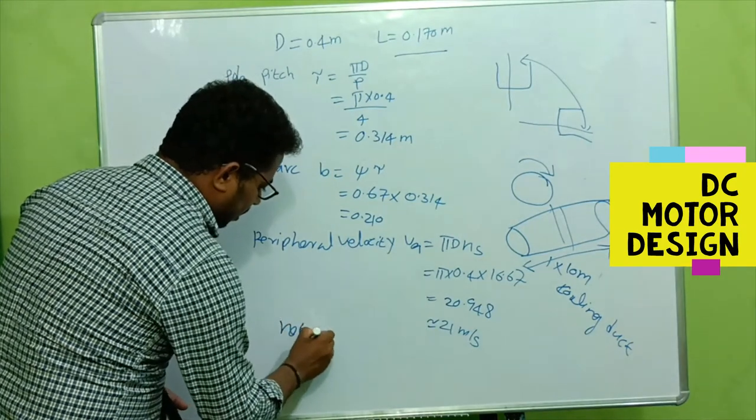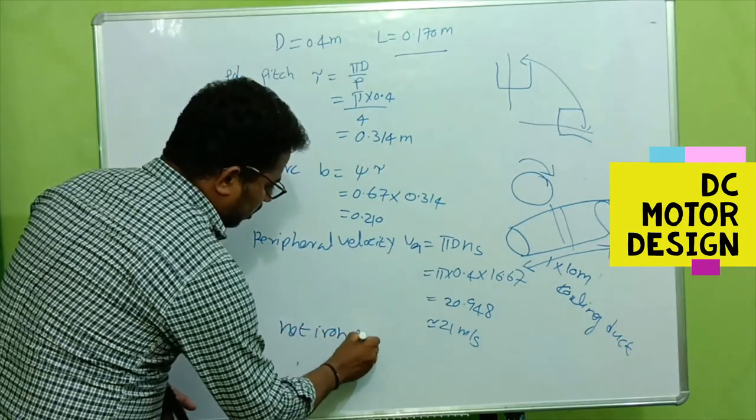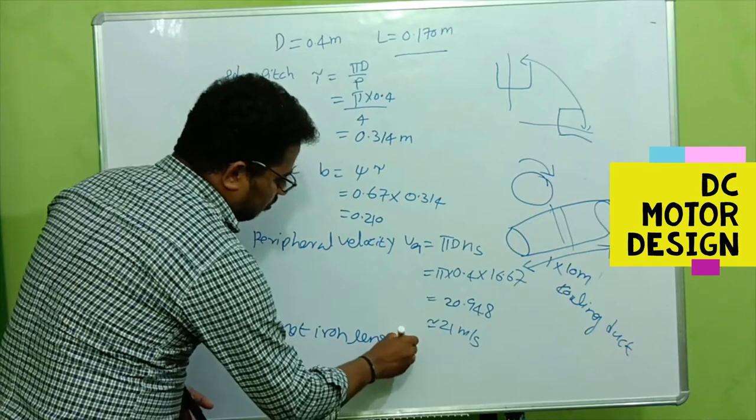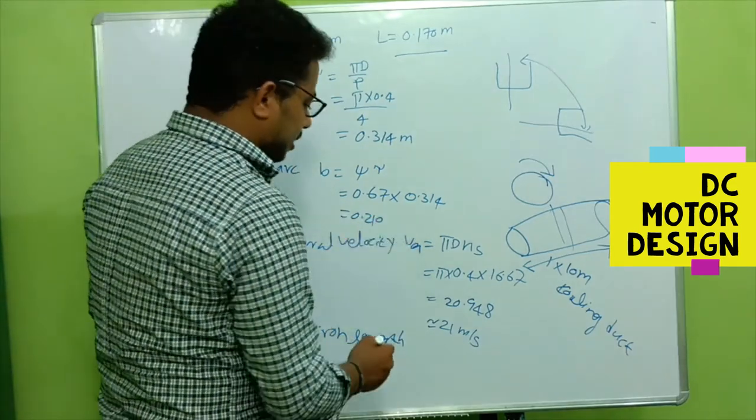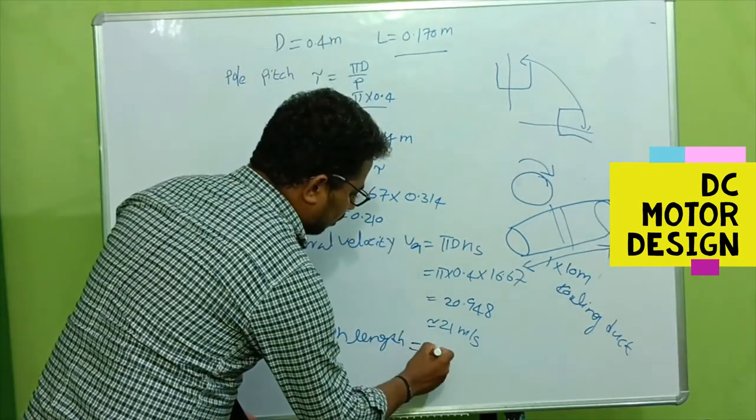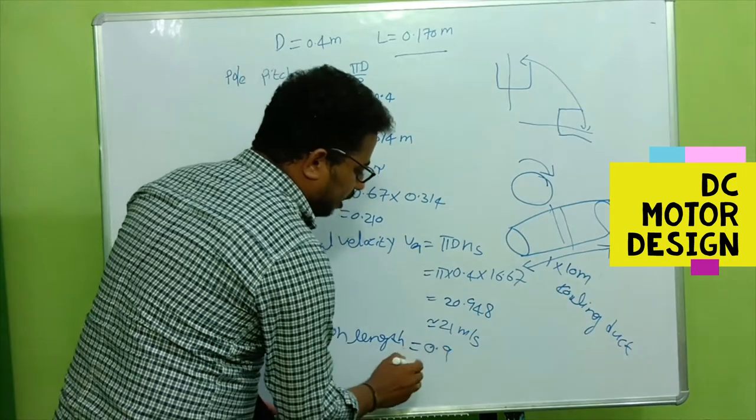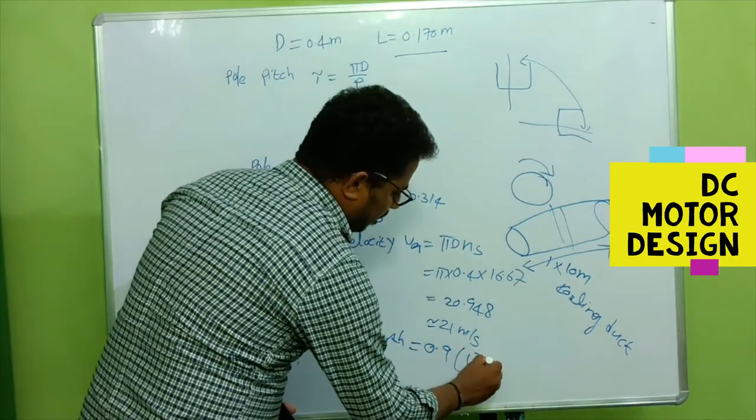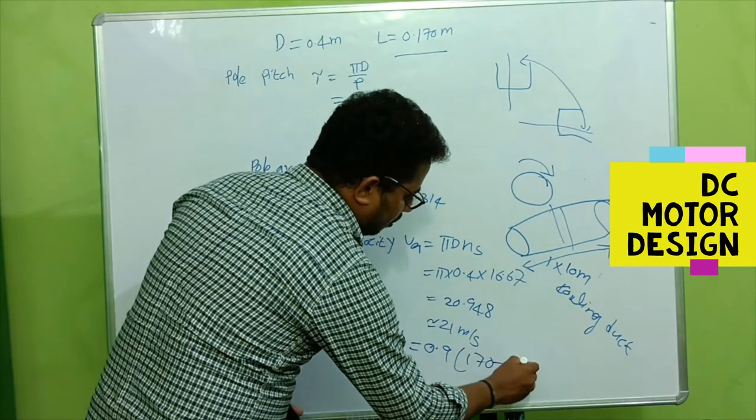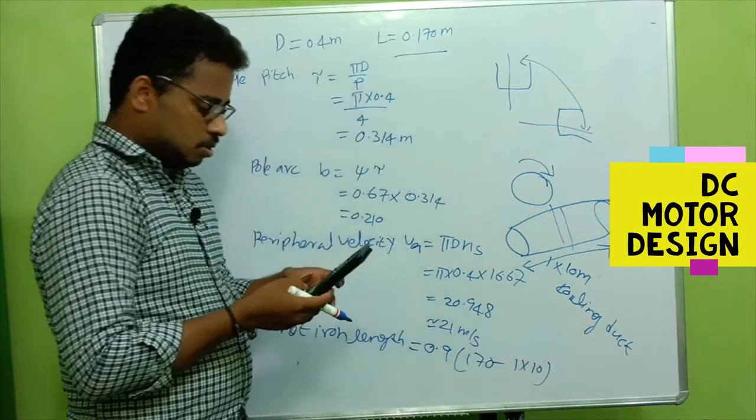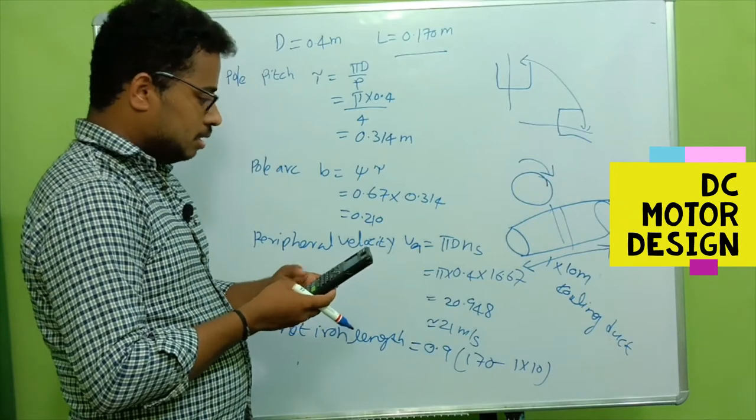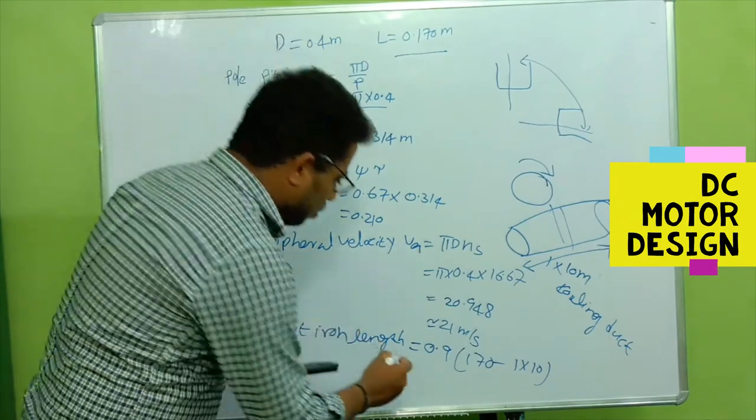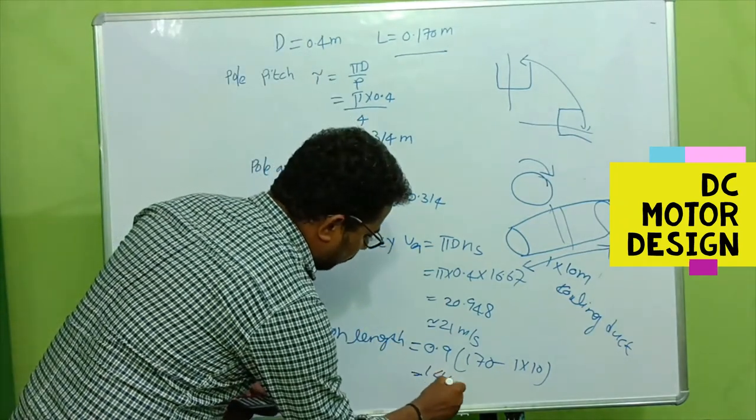What is the net iron length now? We should remove the 10 mm cooling duct, but this is formed by laminations, so we have to consider the stacking factor. Space factor for the core is generally 90 percent. From that 170 mm we're going to remove 10 mm. So 0.9 times (170 minus 10) equals 160, which gives us 144 mm. This is 0.144 meters - the net iron length.